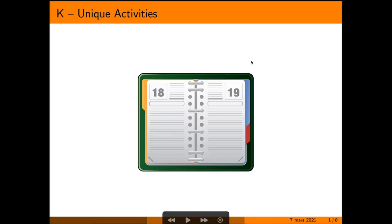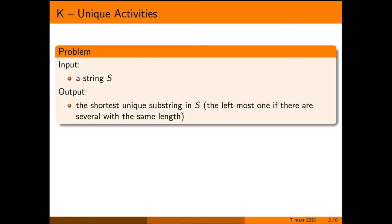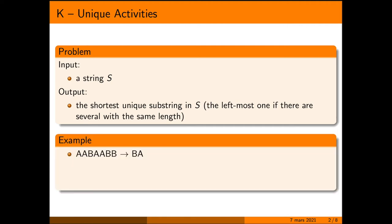Let me introduce the unique activities problem. You are given a string S and you want to return a substring of S which occurs only once and which is as short as possible. If there are multiple ones of the same length, you return just the leftmost.